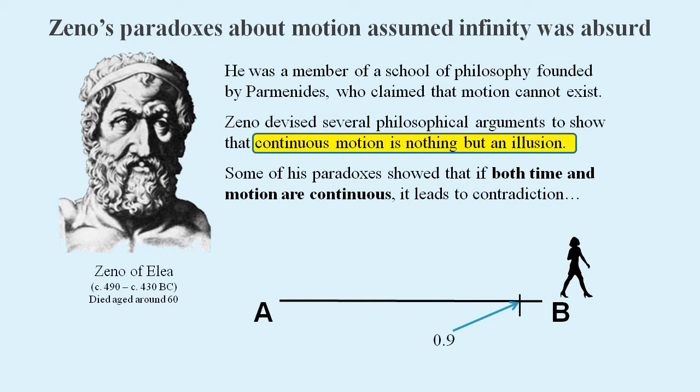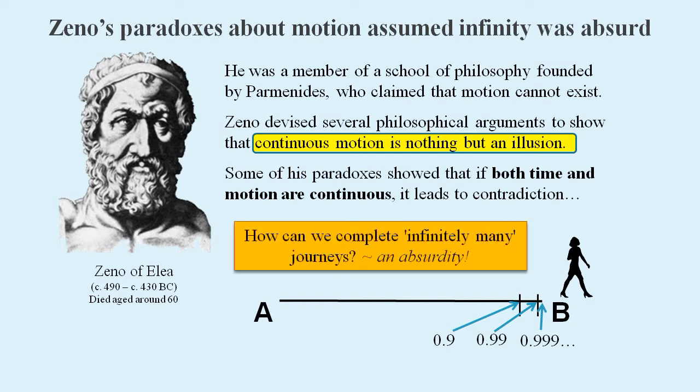We could even relate this scenario to 0.9 recurring by making the first journey 9 tenths of the remaining distance to point B. The next journey is again 9 tenths of the remaining distance, and so on, showing that this process can never reach one. Zeno argued that we obviously can't do an infinite amount of journeys, and that this showed the notion of movement must be wrong.